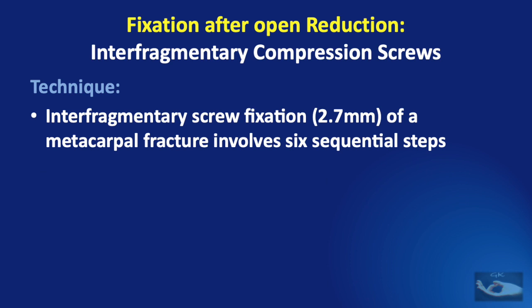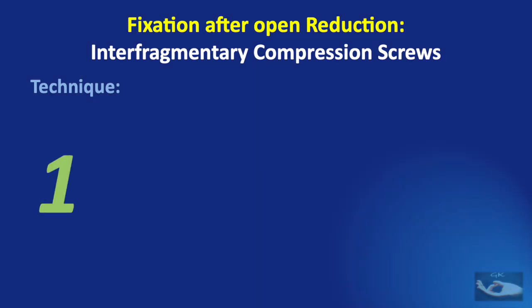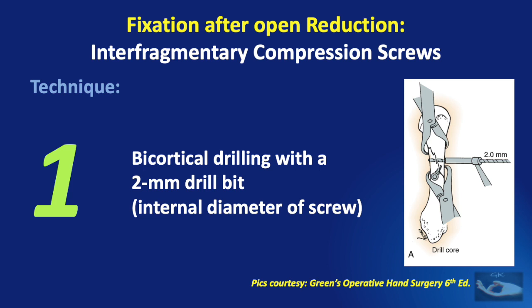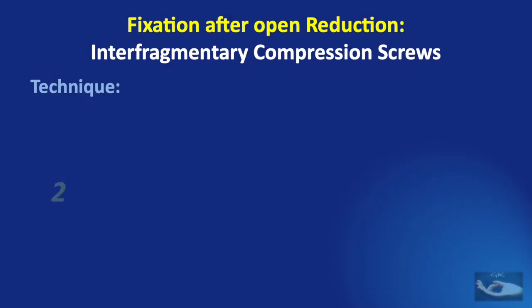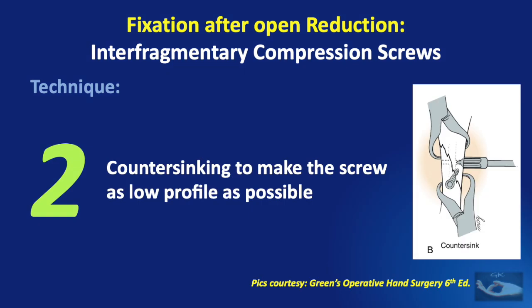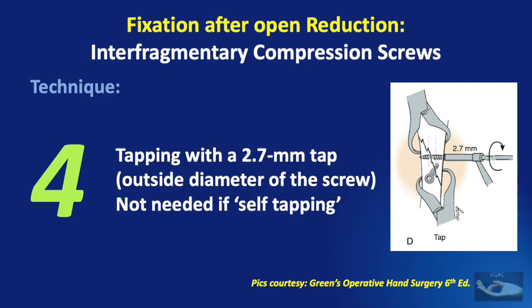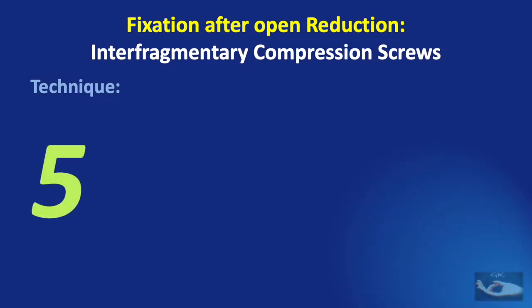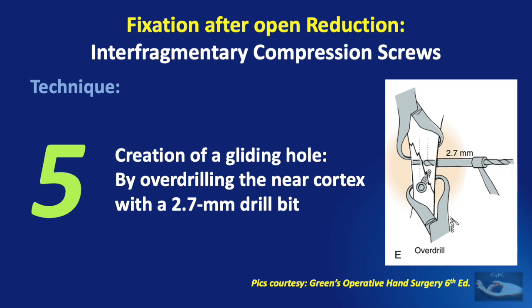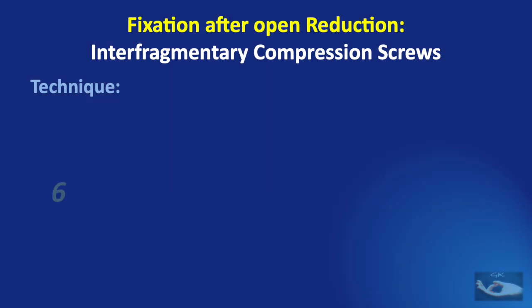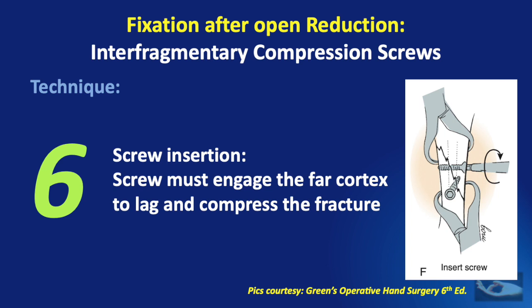The procedure of interfragmentary screw fixation involves six sequential steps. Step one: bicortical drilling with a 2 mm drill bit (the internal diameter of the screw). Step two: countersinking to make the screw as low-profile as possible. Step three: measurement of the depth. Step four: tapping with a 2.7 mm tap (the outside diameter of the screw) — not needed if the screw is self-tapping. Step five: creation of a gliding hole by over-drilling the near cortex with a 2.7 mm drill bit. Step six: insertion of the screw, which must engage the far cortex to lag and compress the fracture.